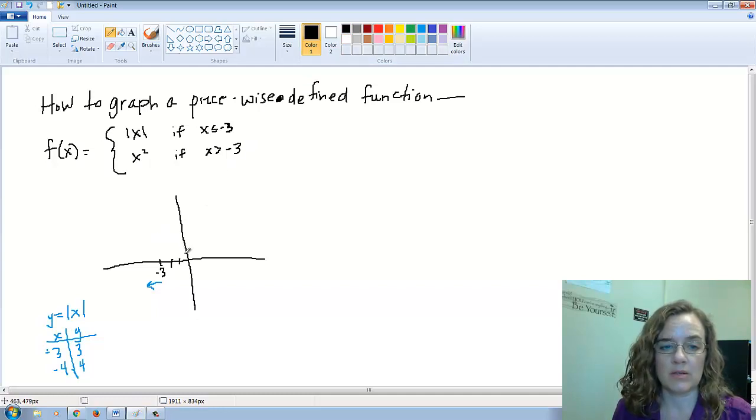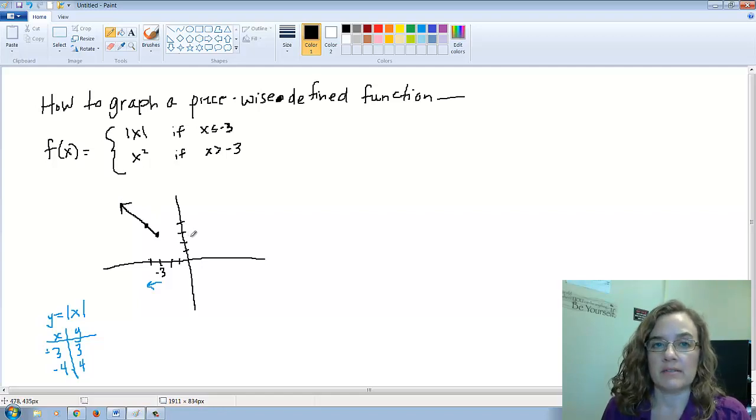Let me put some y values up. Here at negative 3, we're gonna be up at 3. At negative 4, we're gonna be up at 4. If I plug in negative 5, same thing, we're gonna have this portion of absolute value of x. That's it, that's the only portion.